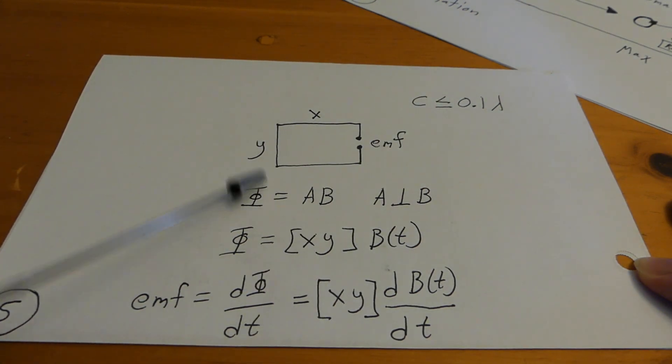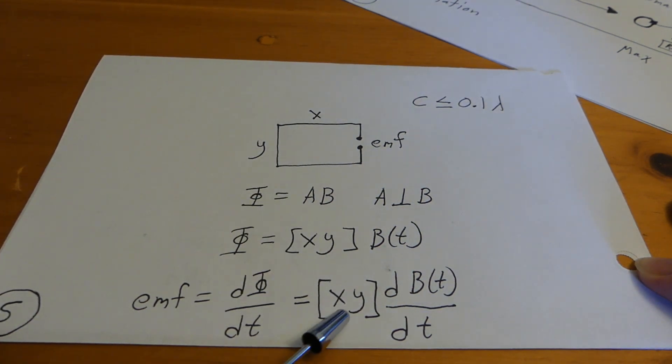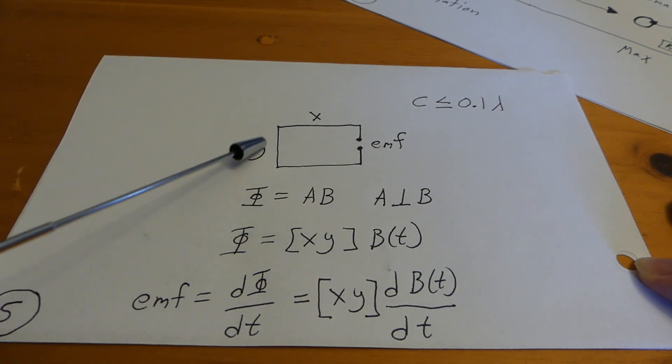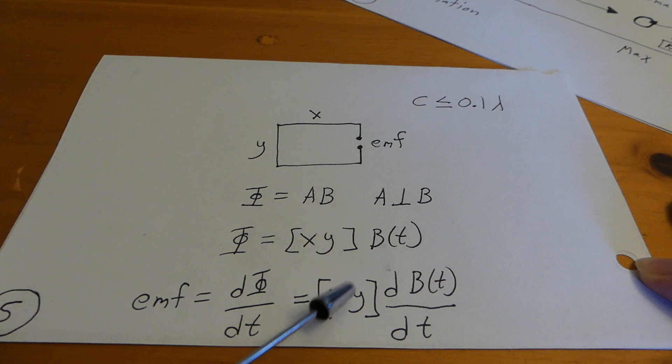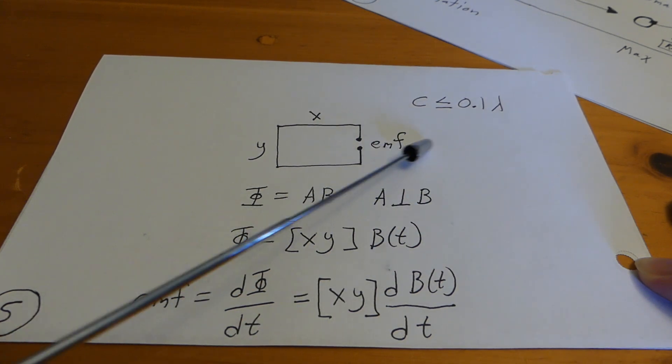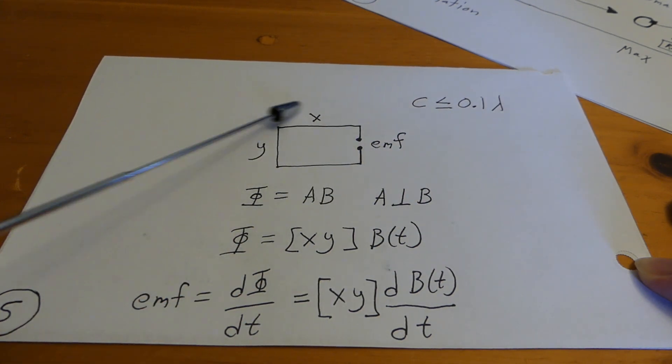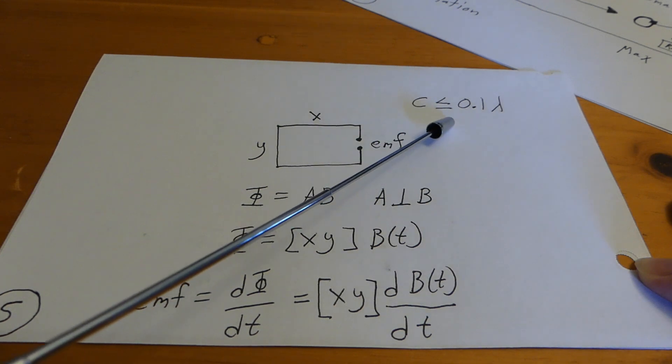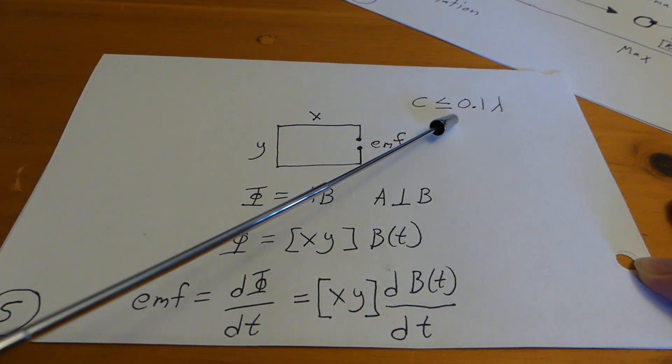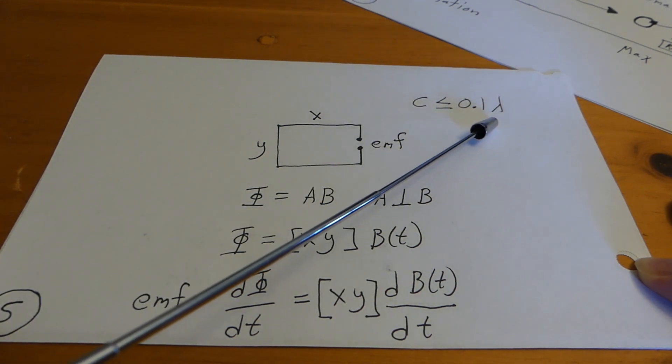So, if you are interested in making a receiving loop, it is generally, if you are interested in weak signals, you want the area of that loop to be pretty close to the max. And again, the bounds are that the length of this wire essentially has to be less than 10% of the wavelength that you are interested in.